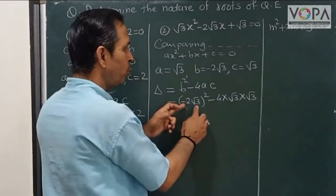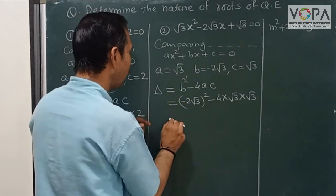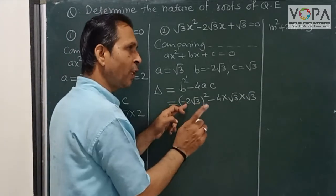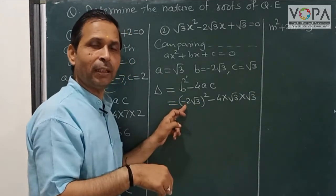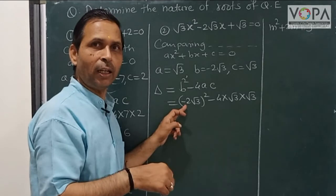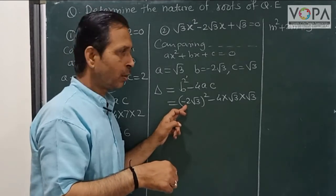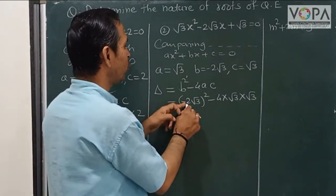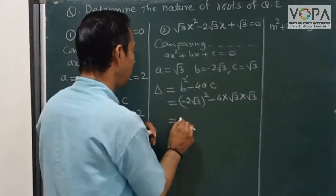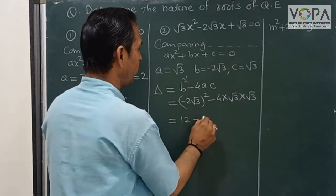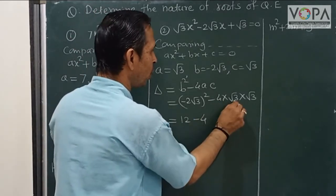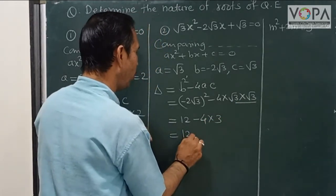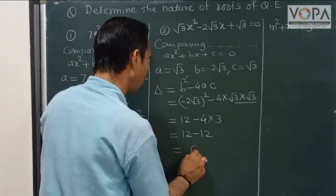Minus 2 root 3 squared gives us: minus 2 squared is 4, times 3 squared — that is 12. Then minus 4 into root 3 into root 3, which is minus 12. So 12 minus 12 is equal to 0.